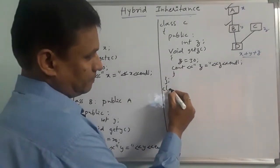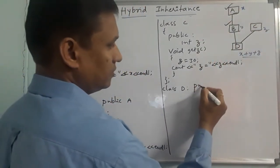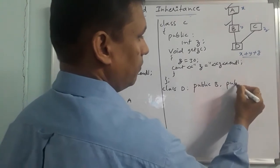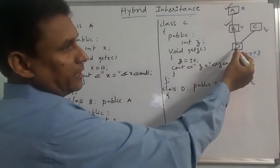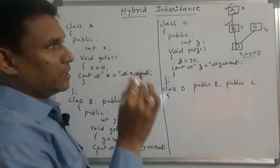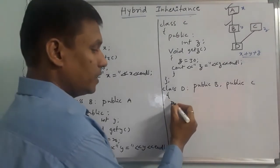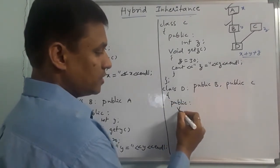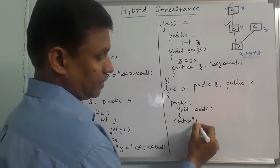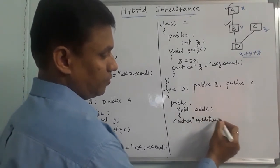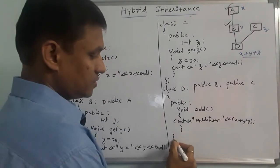Next, class D. Class D is derived from both B and C — so public B, public C. In class D, we have a member function add with public access. The add function outputs: addition equals x plus y plus z. Function close, class close.